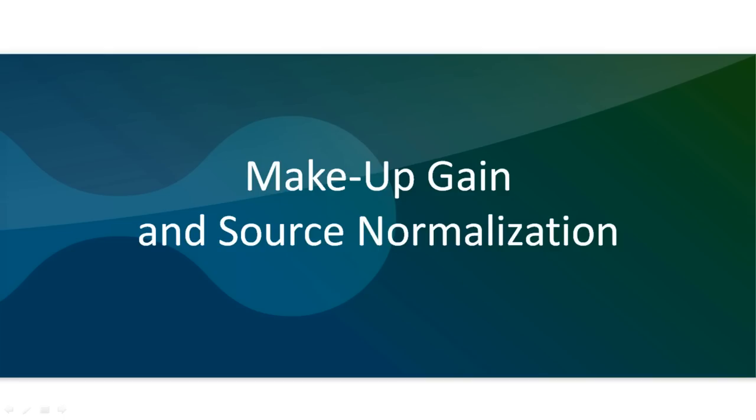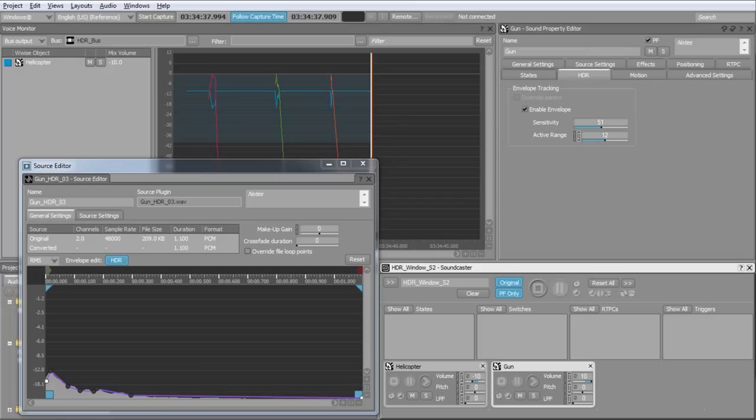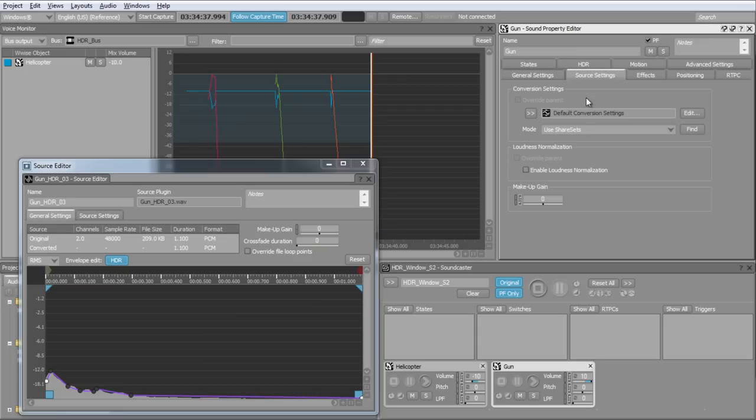Two volume properties are ignored by the HDR system. The source loudness normalization and the makeup gain. These volume controls are primarily used to normalize the audio assets independently of their logical volume. Both controls are located in the source settings tab of the property editor. A considerable advantage of using the loudness normalization is that any sound set at the same volume will sound equally loud when normalized, which greatly simplifies the mix process of setting voices louder or quieter than others.